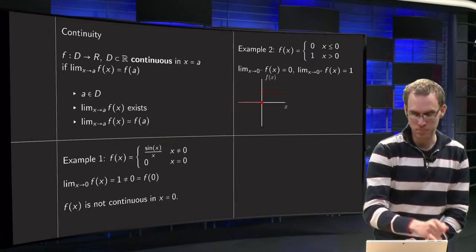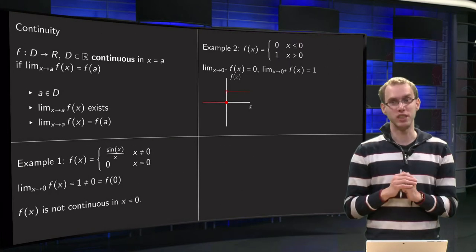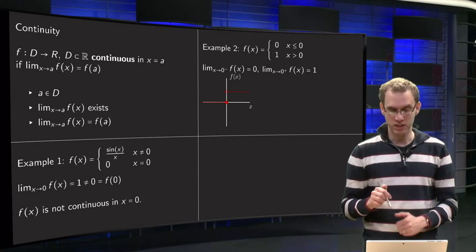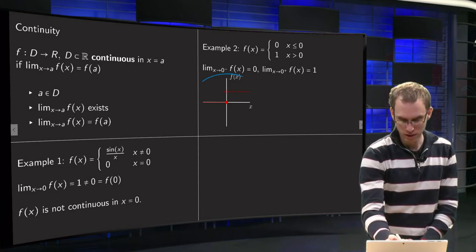A second example. The function which is zero for all negative x and one for all positive x. So the graph is here.